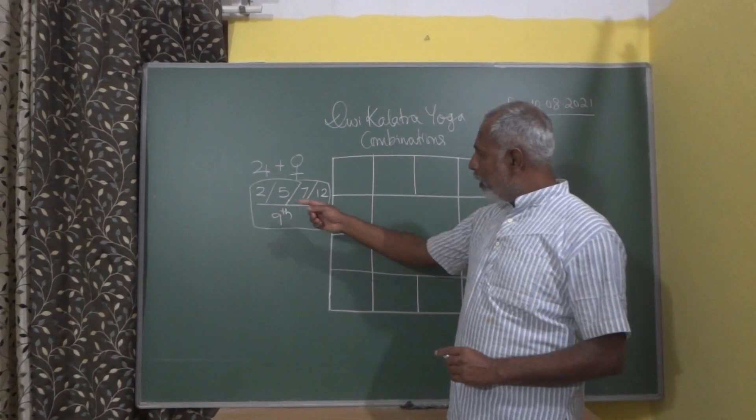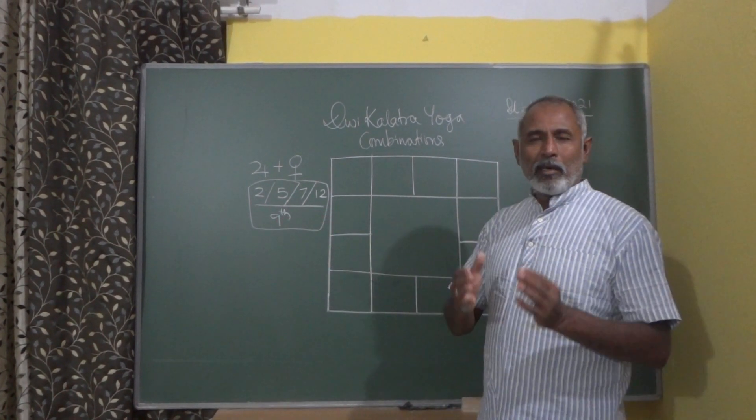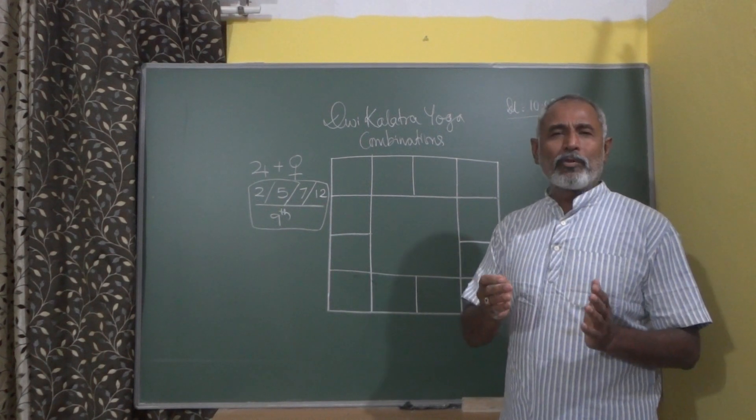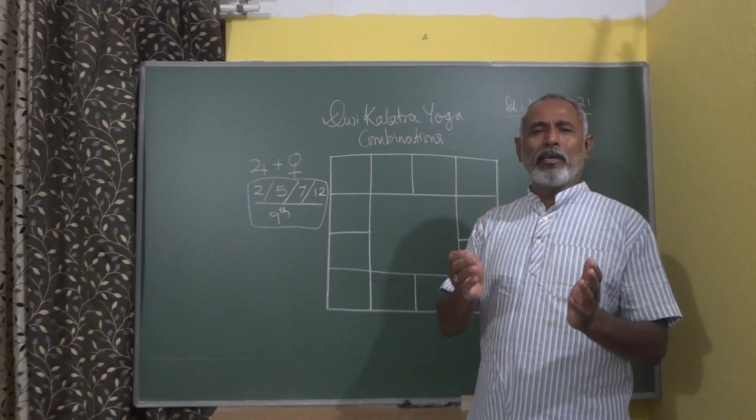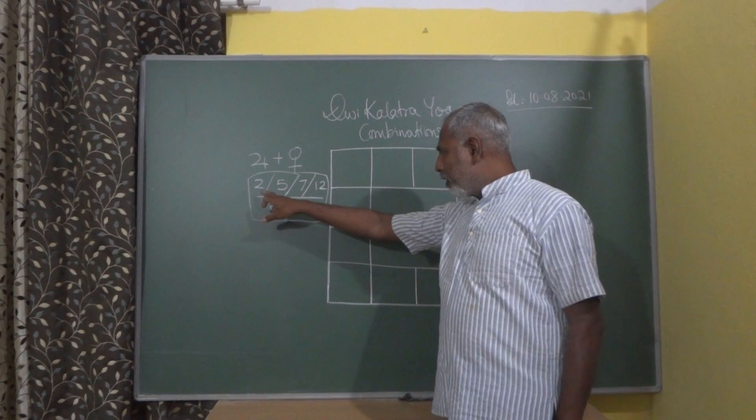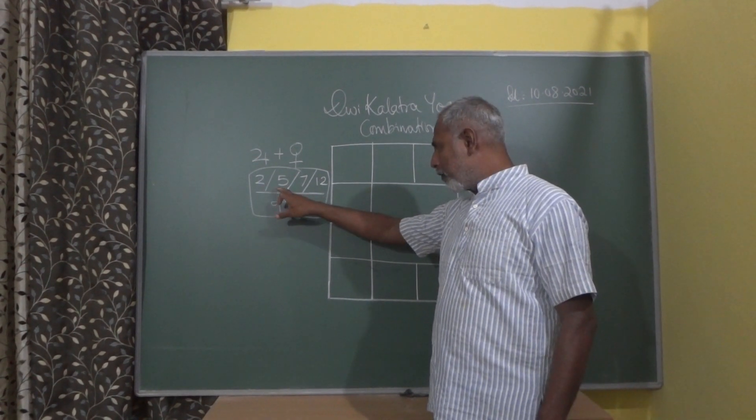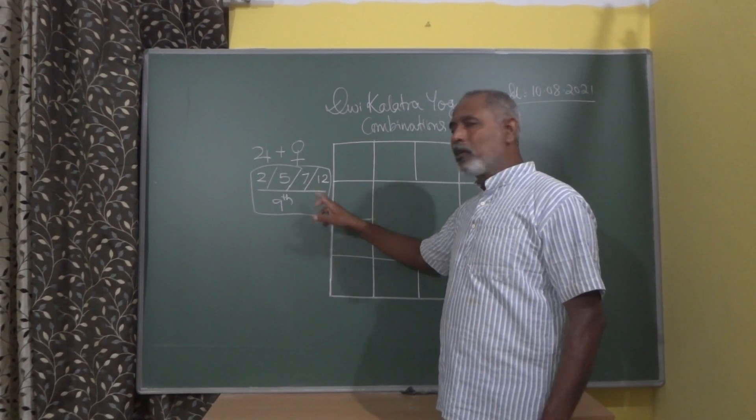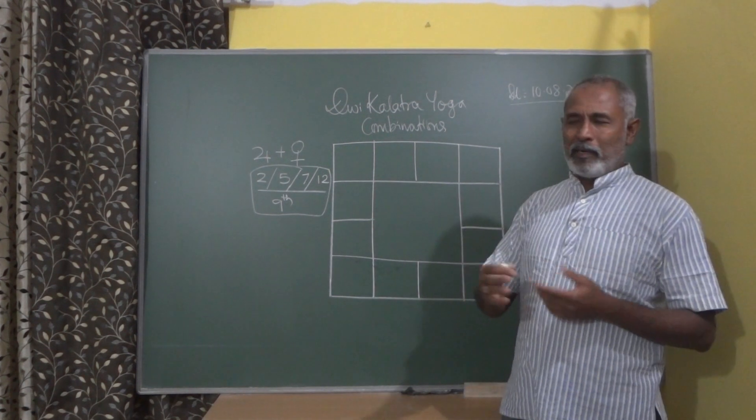And we can see that I have written some house numbers. When Jupiter and Venus are conjunct, conjunct in the sense that they are both within, let's say, 8 or 10 degrees, and then they are placed in the 2nd, 5th, 7th, 9th, and the 12th from the Ascendant.